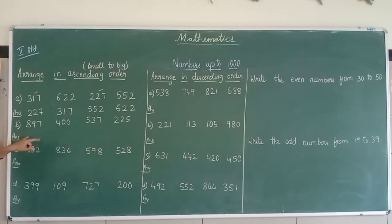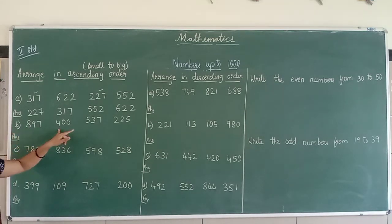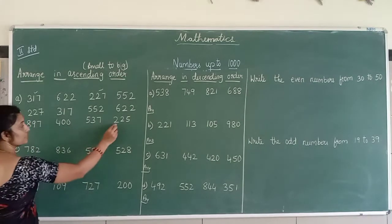Now, next sum. It is 897, we are going to leave a line. 897, 400, 537, and 225. Here, you see the first digit.